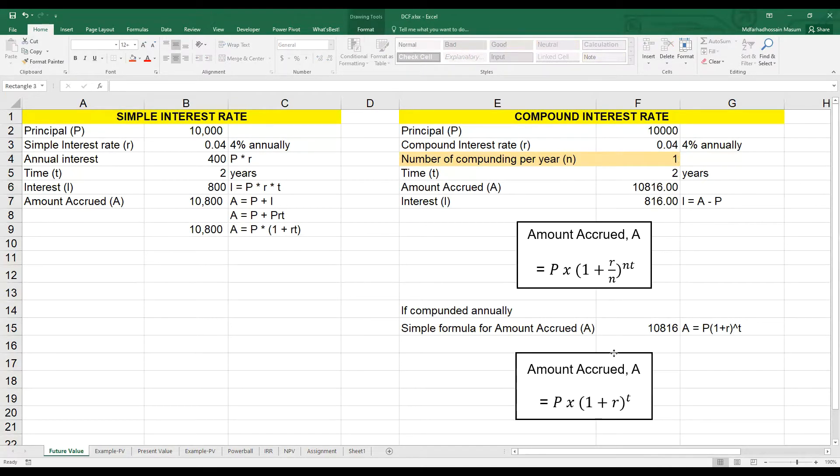From this point onwards we will only talk about annual compound interest rate. There is a federal law that requires the commercial interest rates to be reported as an annual interest rate. Otherwise, it becomes too confusing for the consumers and they cannot make a choice based on what is going on.